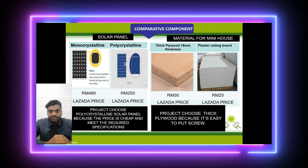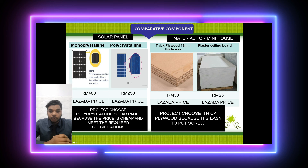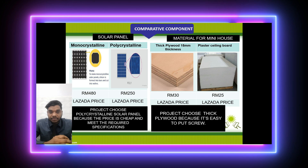The second most important component is the construction of the solar house. Comparing thick plywood versus plaster shielding board: the plaster shielding board is 9.5mm thick at RM25, while the thick plywood is 15mm thick at RM30. This project uses thick plywood due to its cost-effectiveness and better specifications.